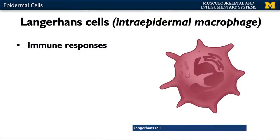Langerhans cells are large cells found in the epidermis and in other areas of the body. They are a type of macrophage, meaning they will engulf or ingest microbes within the epidermis — very important for immune responses. If something that shouldn't be there moves into the epidermis, the Langerhans cell will engulf that microbe and convert it into waste that can be secreted later.